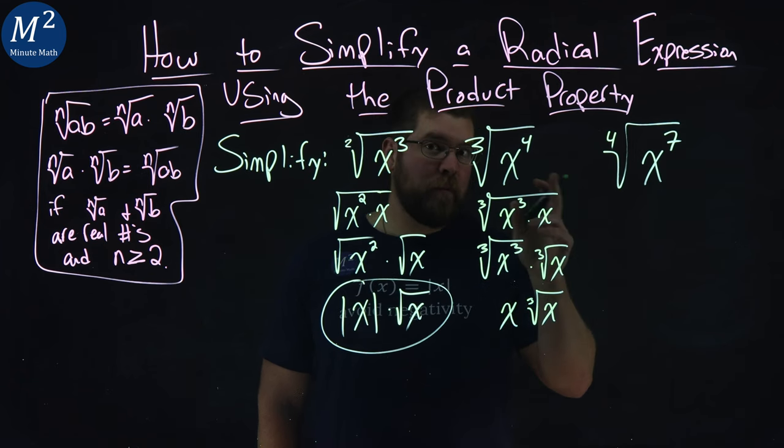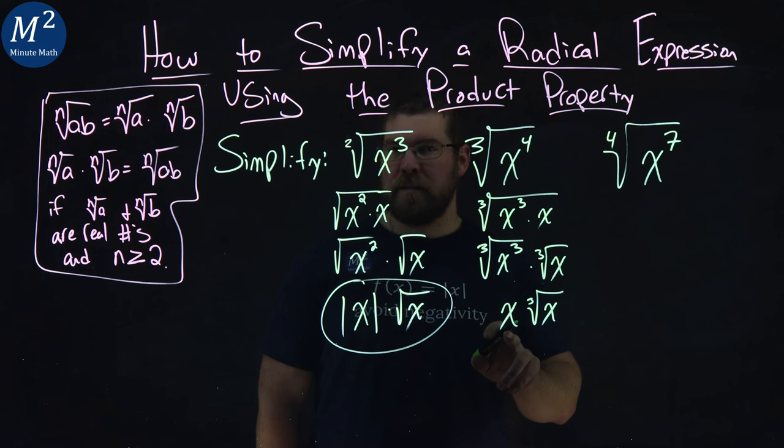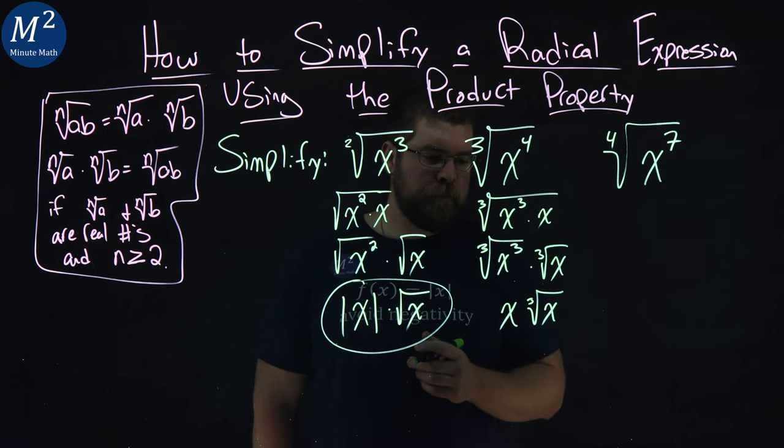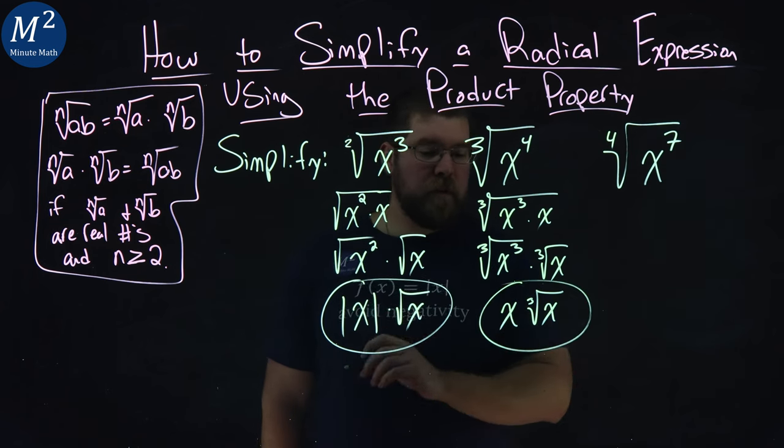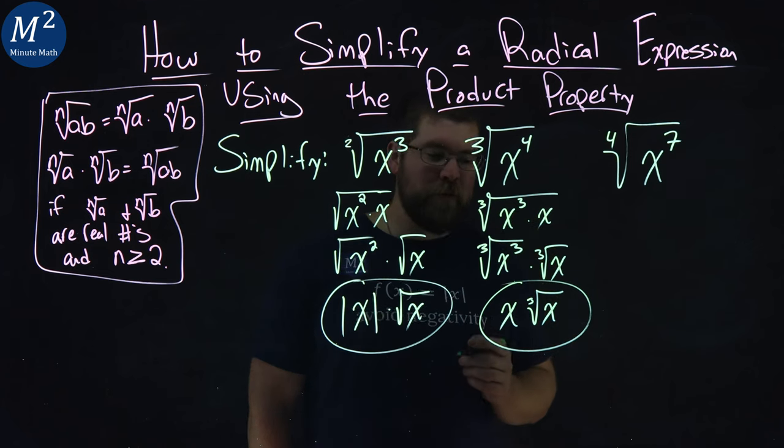And then we take a third root of negative 8, be negative 2, and we would still come back. So we don't have to worry about that canceling out. Either way, our final answer here is x times the third root of x.